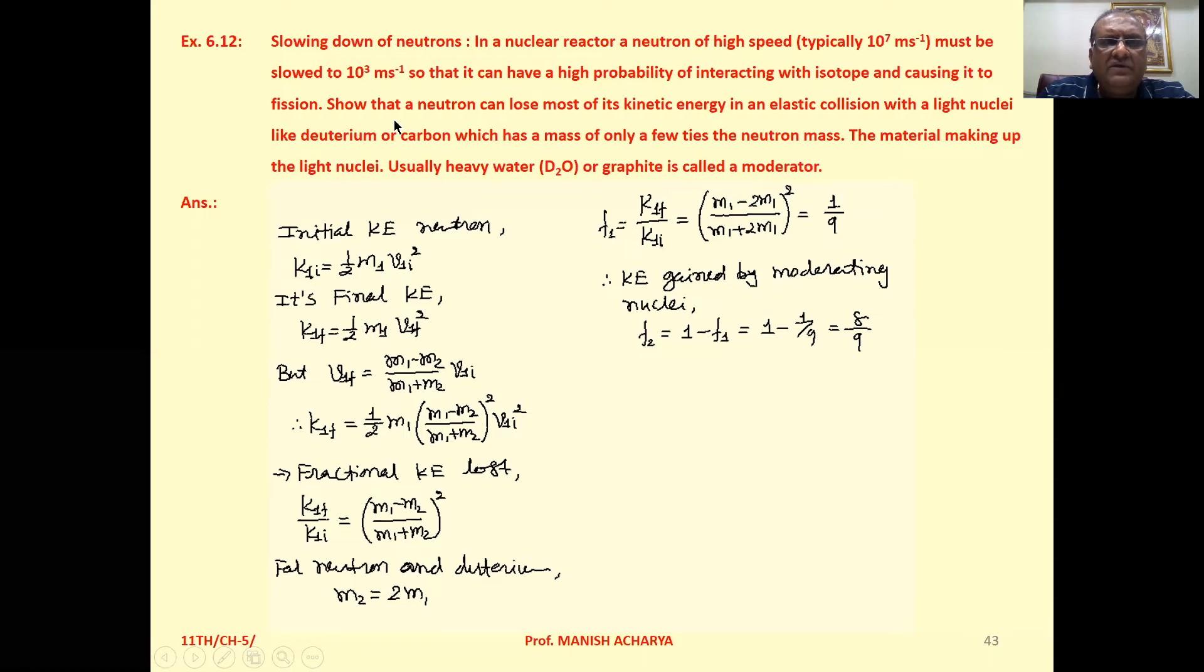The neutron can lose most of its kinetic energy in an elastic collision with a light nucleus like deuterium or carbon, which has a mass of only a few times the neutron mass. The material making up the light nuclei, usually heavy water or graphite, is called a moderator.